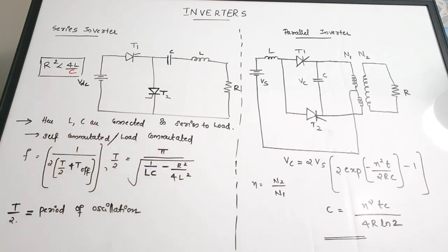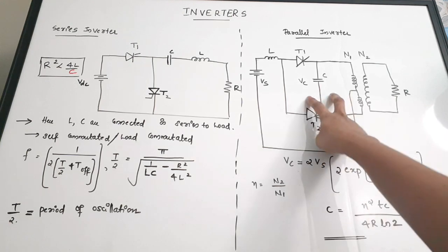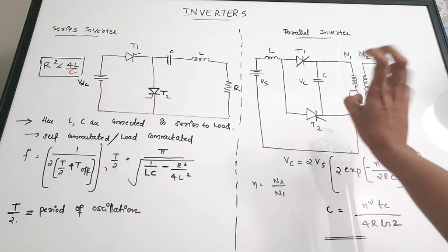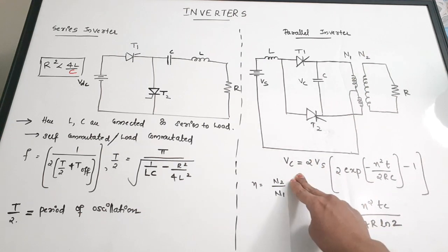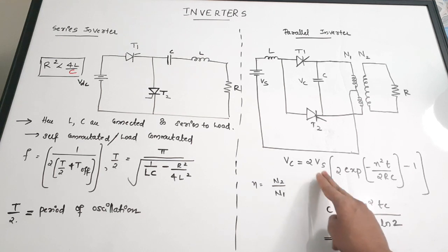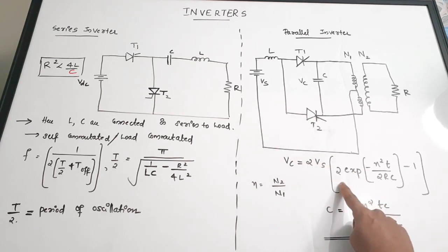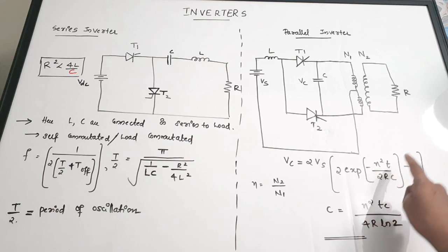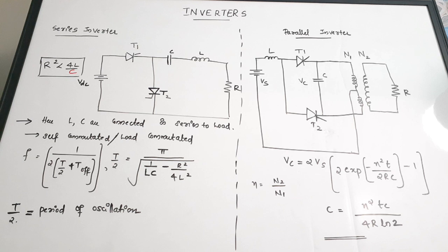These are the two important equations for a series inverter. Talking about a parallel inverter, you can see that the capacitor comes in parallel with the load resistance. The voltage across the capacitor is given by Vc = 2Vs × (2e^(−N²T / 2RC) − 1), where Vs is the source voltage.